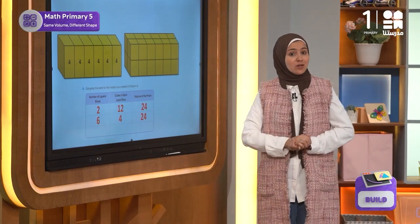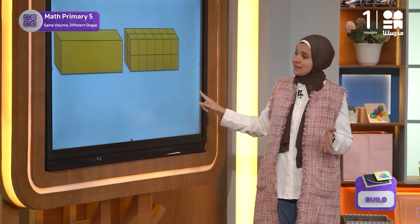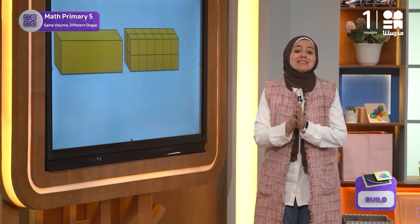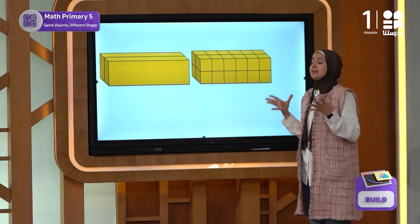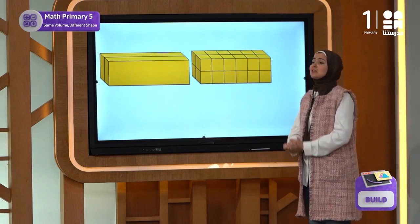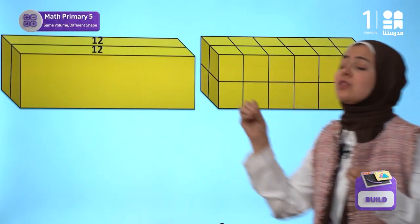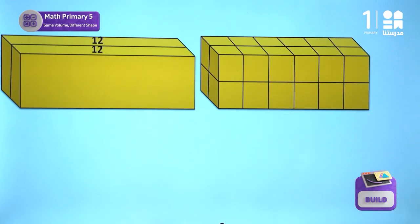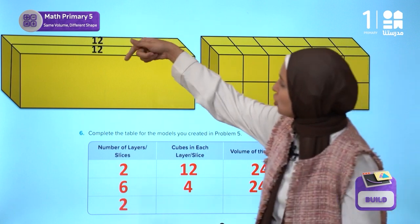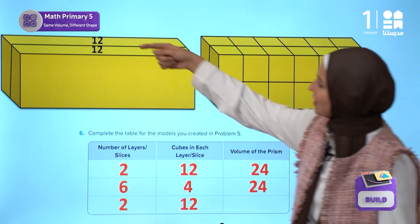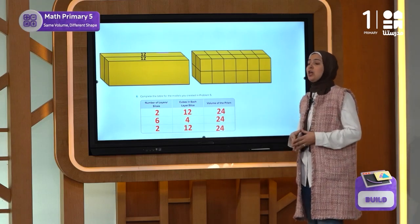Now for the third way — we can decompose the figure by dividing it vertically, but from the side this time, not from the face in front of us. We slice it like that, giving us two slices. Each of those two slices contains 12 cubes. So the volume is also 24 cubic centimeters. In the table, the number of layers is two, the number of cubes in each layer is 12, and the volume of the prism stays as 24 cubic centimeters.